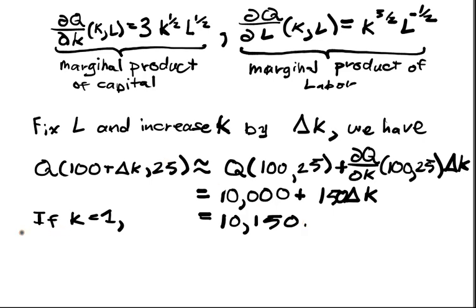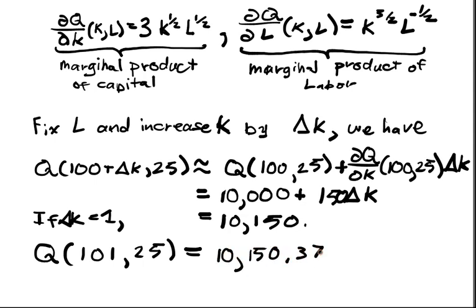And the actual value, you can compute Q of 101, 25, where delta K equals 1. That's actually equal to 10,150.374 and a bunch of other smaller things. So that's actually a very good approximation, as long as delta K was actually small.